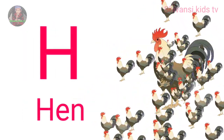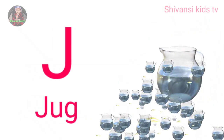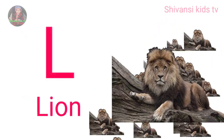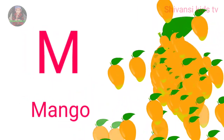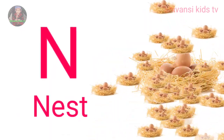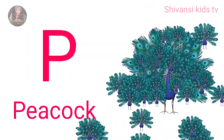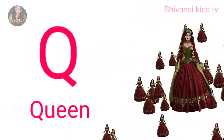H for hand, I for ice cream, J for jug, K for kite, L for lion, M for mango, N for nest, O for orange, P for peacock, Q for queen.